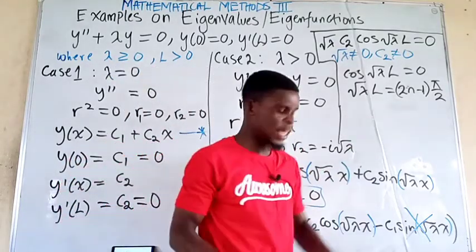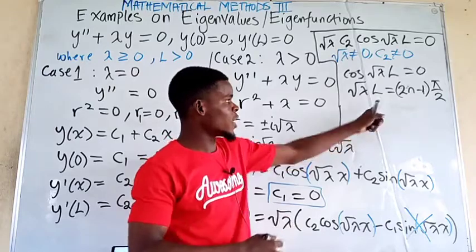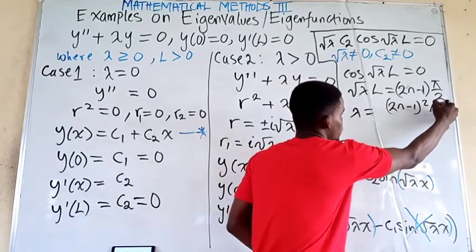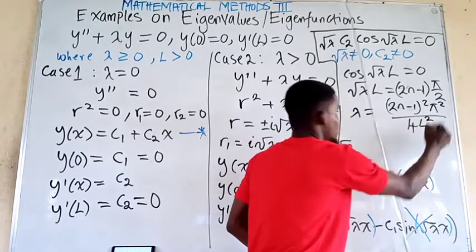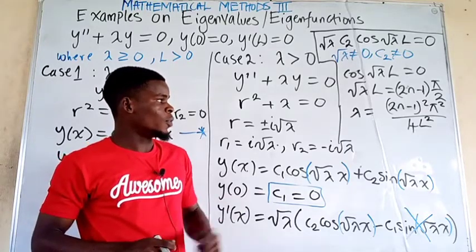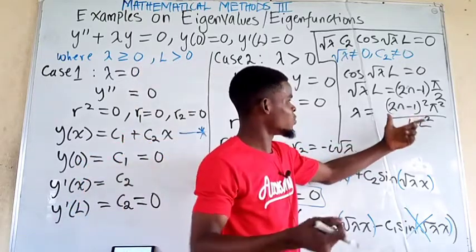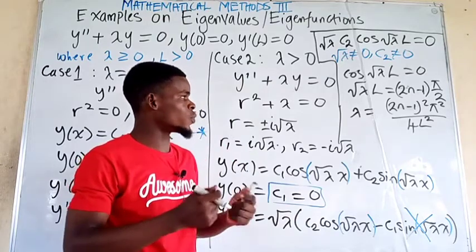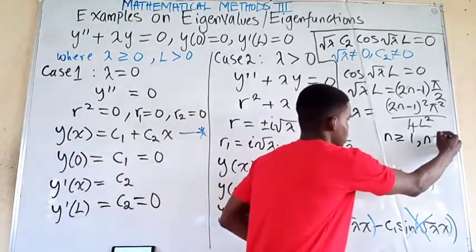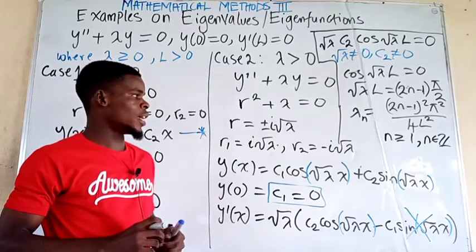Since root lambda times l equals (2n minus 1) pi over 2, we solve for lambda by dividing both sides by l and squaring both sides. This gives the eigenvalue lambda equals (2n minus 1) squared pi squared over 4l squared, where n is an integer greater than or equal to 1. That is our eigenvalue.